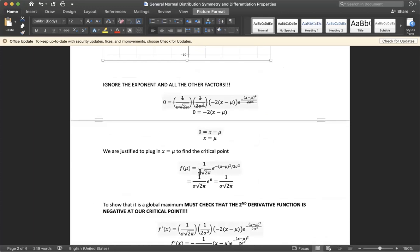Now we're justified to plug in x equals mean to find the critical point. This gives us one over sigma times square root of two pi times e raised to zero power. Any number raised to zero power is one, so we get this value as our critical point.